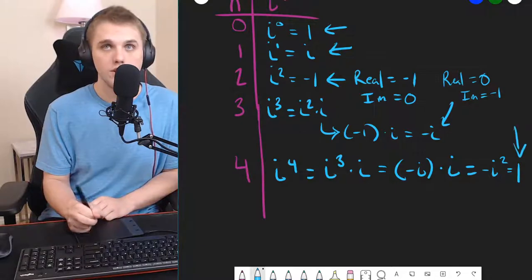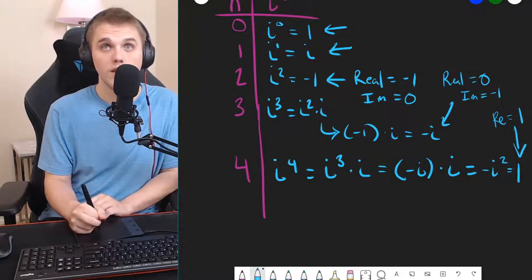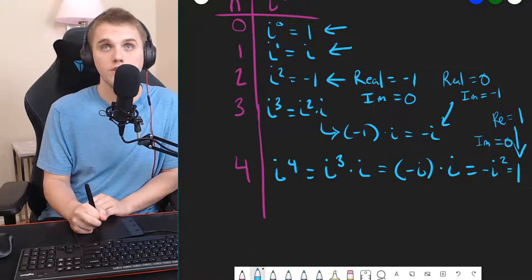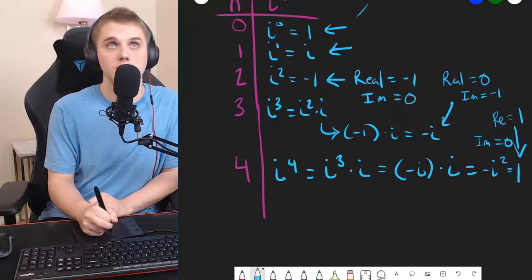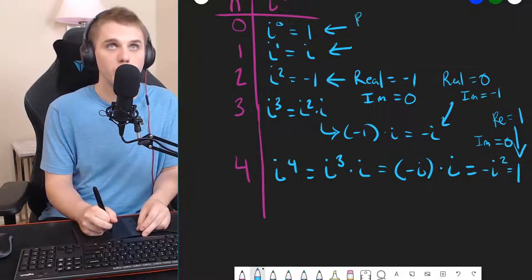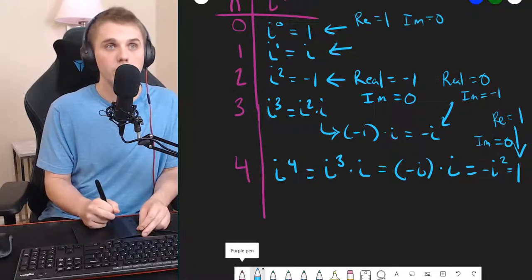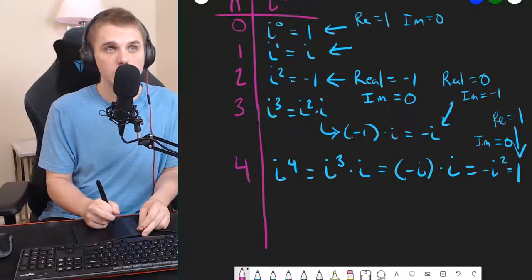So, in this instance, the real part is 1, and the imaginary part is 0, which is the same as this instance here, where the real part is 1, and the imaginary part is 0.